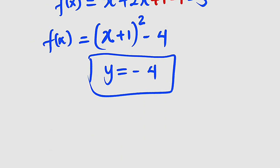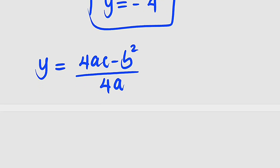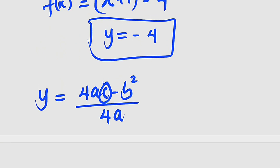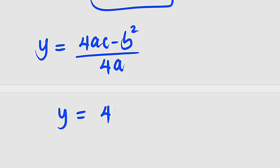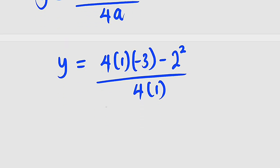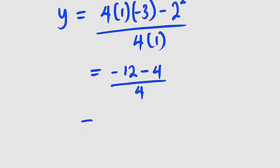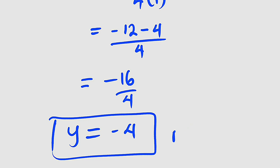The last method uses the formula: y = (4ac − b²) / 4a. Let's substitute. a is the coefficient of x², which is 1. c is the constant, which is −3. b is the coefficient of x, which is 2. So y = (4 × 1 × (−3) − 2²) / (4 × 1). 4 times 1 times −3 gives us −12. Minus 2 squared is 4. Divided by 4 times 1, which is 4. On top we have −12 − 4 = −16. Divided by 4: 16 divided by 4 is 4, and because of the negative we have −4. So y = −4, which is our minimum value.